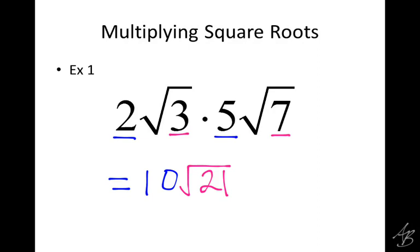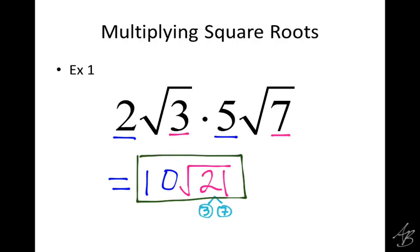Now we have a square root with a coefficient and a radicand. What's the next thing we would do? Let's see if we can simplify this. We'll do a factor tree just on the radicand. We get three times seven, and those are both prime. Are we going to end up with any pairs? No. So if you're simplifying the square root and there aren't any pairs, all we do is keep it as is. This is actually our final answer — we multiplied the coefficients and got a new coefficient, multiplied the radicands and got a new radicand, and it could not simplify.